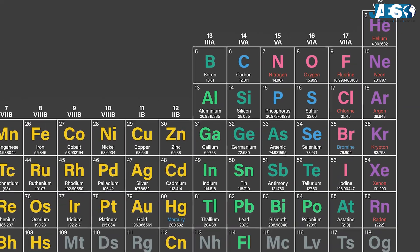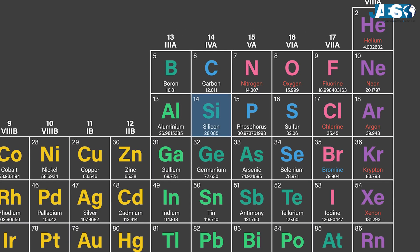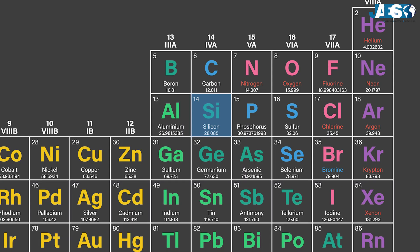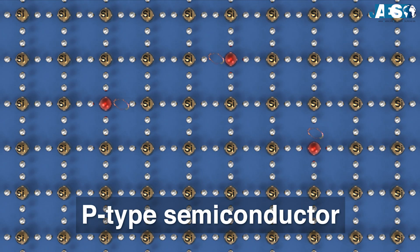Silicon belongs to the 14th group of the periodic table, and every atom has four valence electrons, forming a very regular crystal lattice. If dopant atoms from elements of the 13th group with three-valence electrons are added, such as boron or gallium, we obtain a P-type semiconductor and we create a hole in this structure.